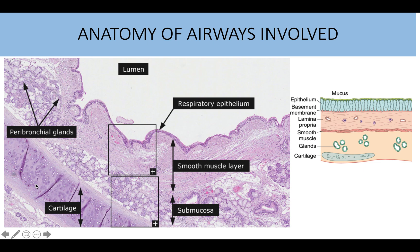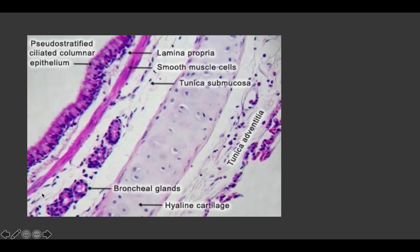To summarize: you have ciliated pseudostratified columnar epithelium first, then the lamina propria containing peribronchial glands, then smooth muscle, then the tunica submucosa which also contains bronchial glands, then hyaline cartilage and the tunica adventitia. Pause the video and make sure you know this histology so you can understand exactly where in the bronchial lumen the type 1 hypersensitivity reaction is taking place.